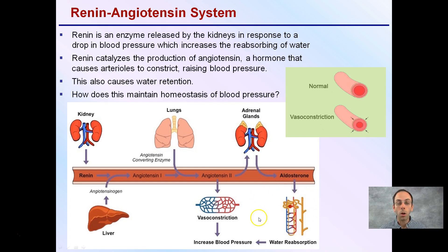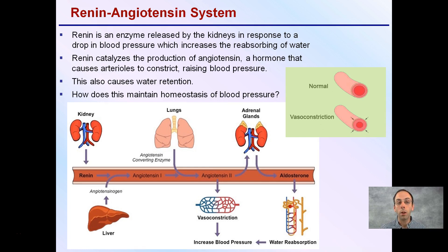We want to be able to reabsorb water in our nephrons. Renin also catalyzes the production of angiotensin, which is a hormone that causes arterioles to constrict, raising blood pressure. By constricting through vasoconstriction — closing that down — we're causing an increase in pressure. This will also cause water retention to occur, helping the body maintain homeostasis of blood pressure.